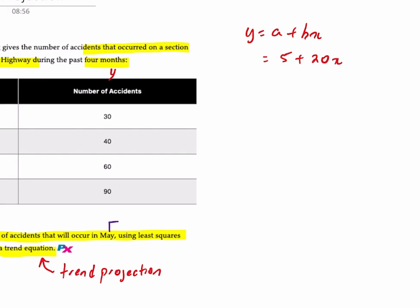So now if we want to project the number of accidents for the month of May, this is where x would equal five. So for May, y equals five plus 20 times five, and that should equal 105 accidents projected for the month of May.